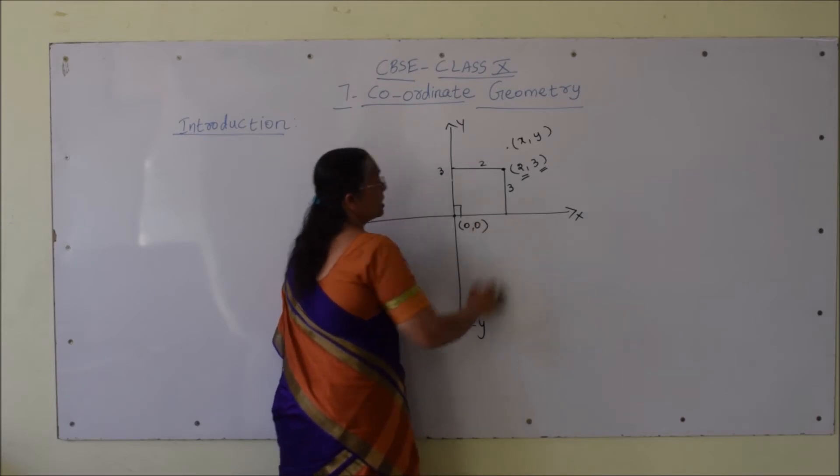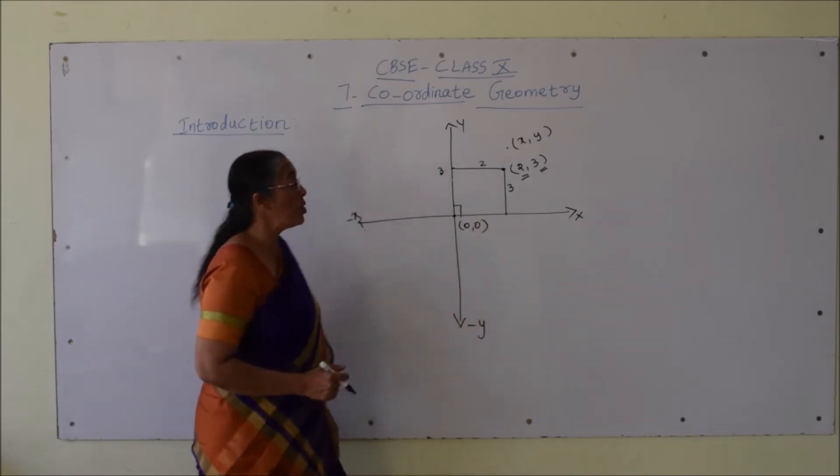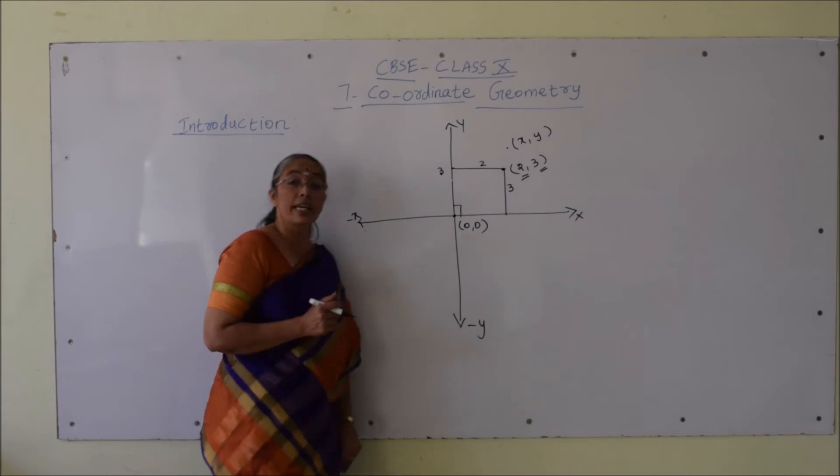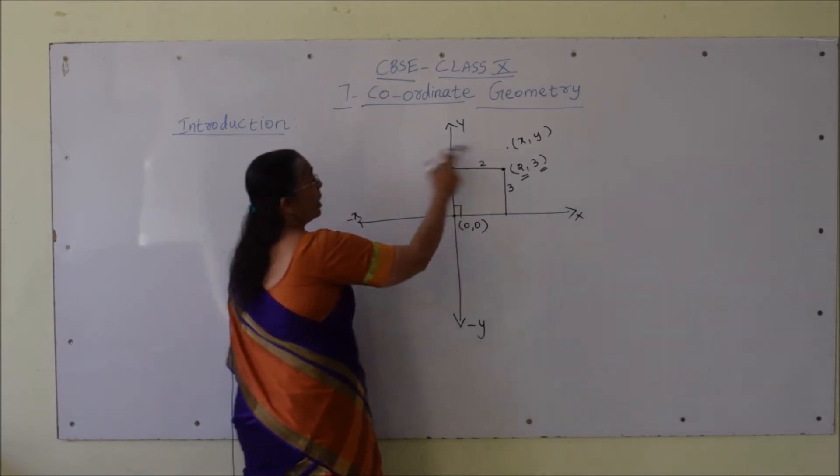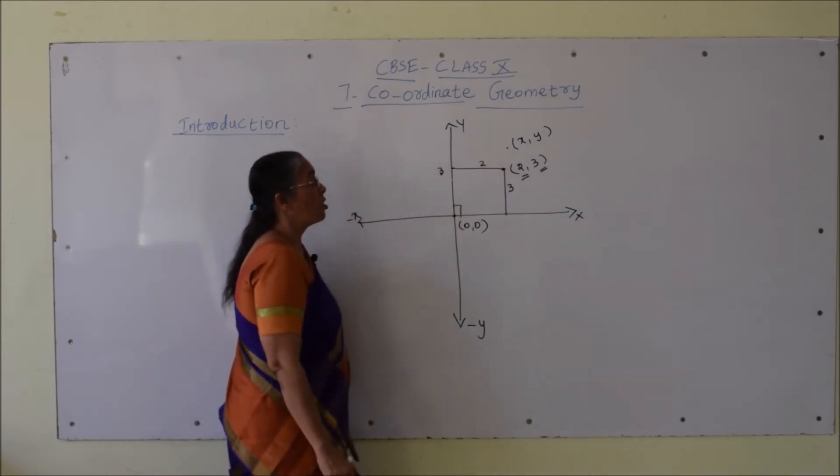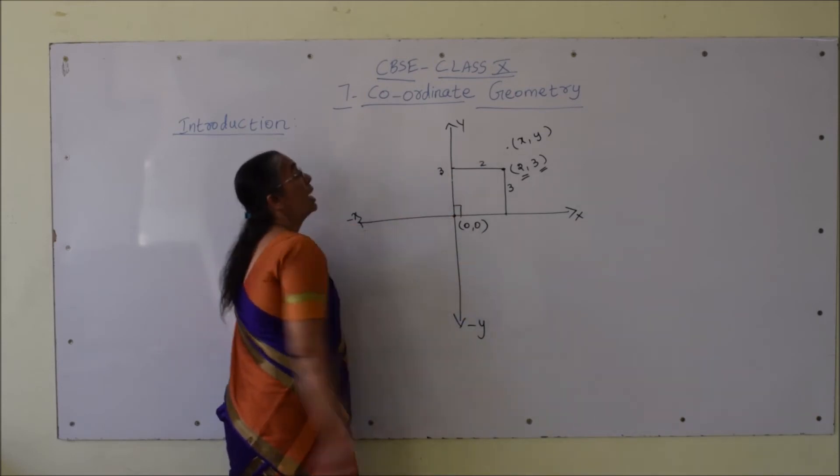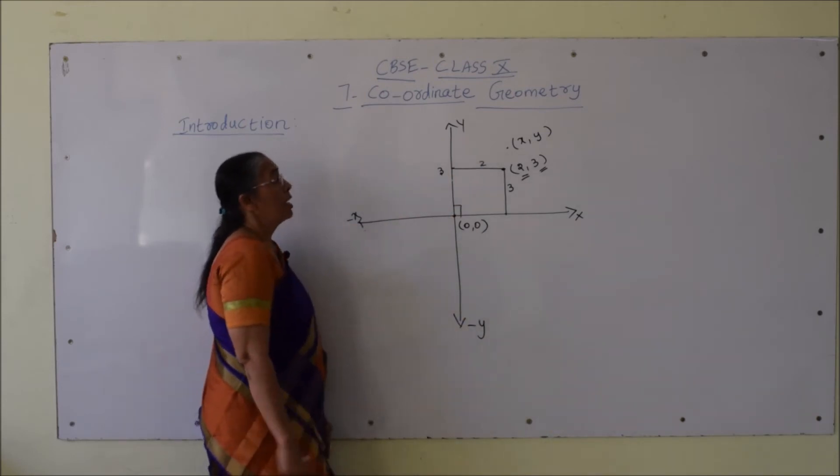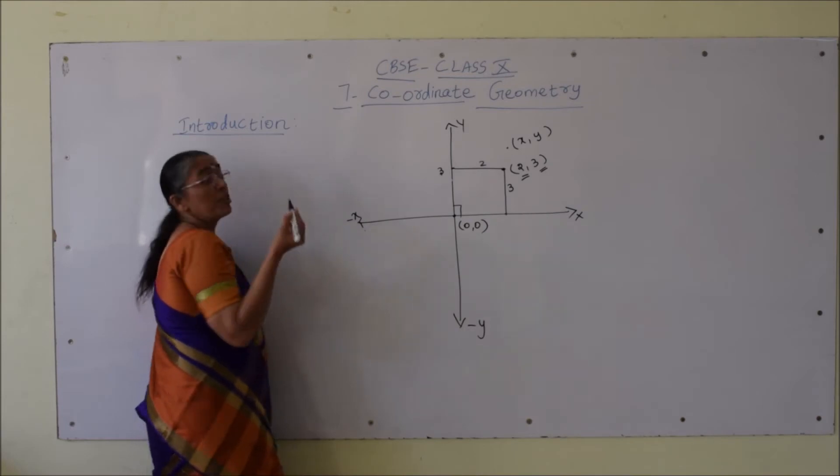The equation of the x-axis is y = 0 and the equation of the y-axis is x = 0. Each point can be uniquely determined by the coordinate pair (x, y).